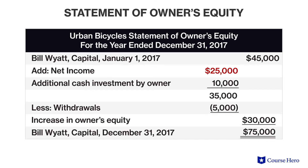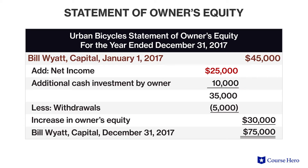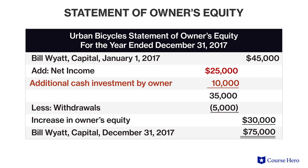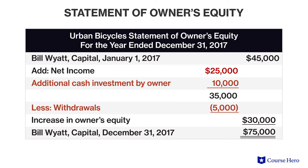For example, Urban Bicycles reported a $25,000 net income in 2017. The equity for Urban Bicycles at the beginning of 2017 was $45,000. The company grew from within by $25,000, its 2017 net income. Some owners invested an additional $10,000 while others withdrew $5,000, causing another net $5,000 increase. Altogether, equity went from $45,000 to $75,000.